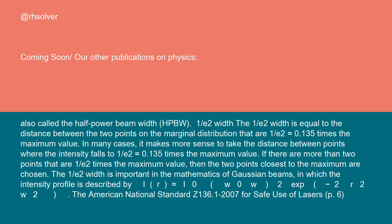1/e² width: The 1/e² width is equal to the distance between the two points on the marginal distribution that are 1/e² equals 0.135 times the maximum value. In many cases, it makes more sense to take the distance between points where the intensity falls to 1/e² equals 0.135 times the maximum value.